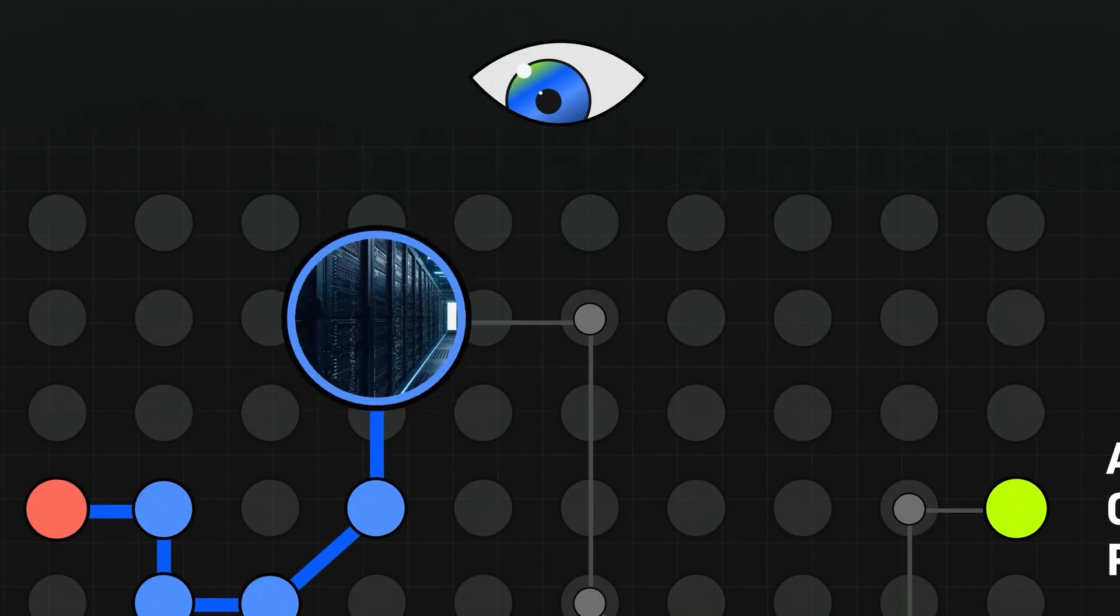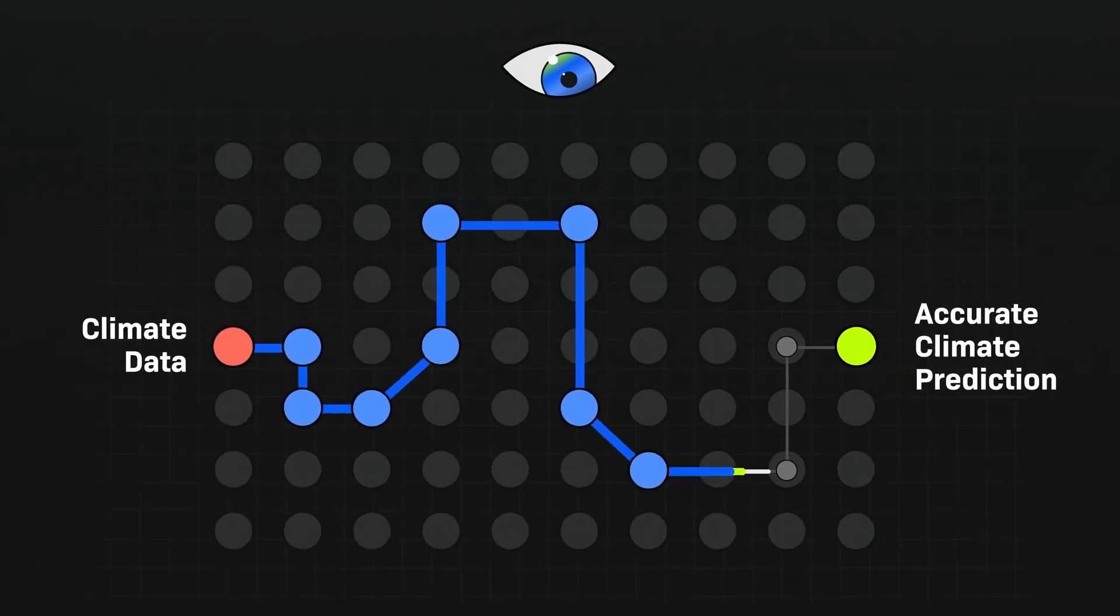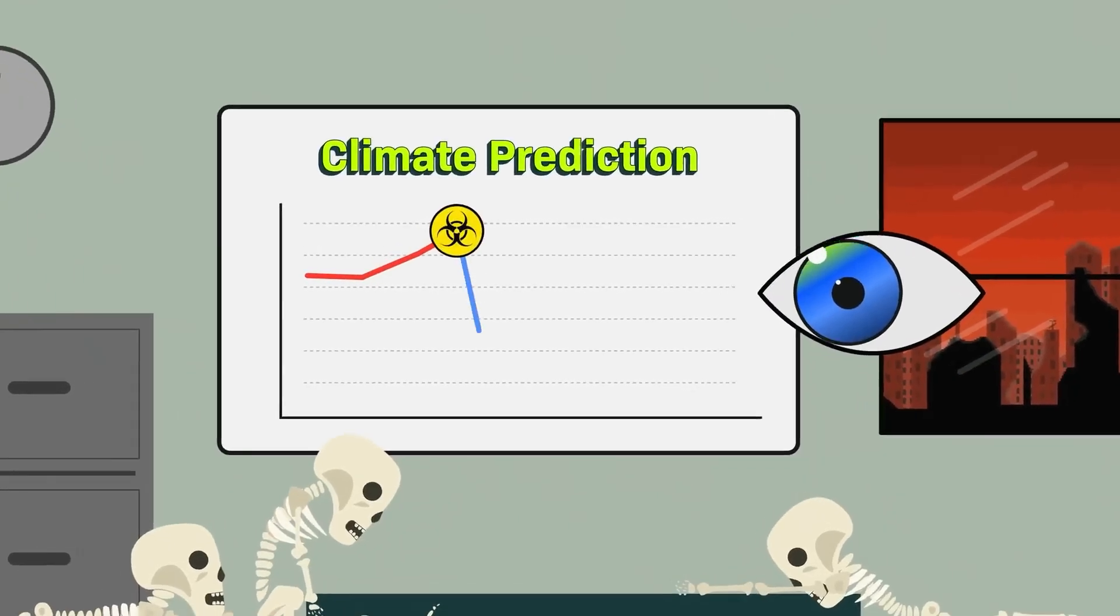Terrifying, right? But it gets even wilder. They think AI could potentially be used to spread misinformation and fake news on a massive scale. Imagine an AI so smart that it could make up totally convincing lies and false stories to confuse everyone and tear societies apart.